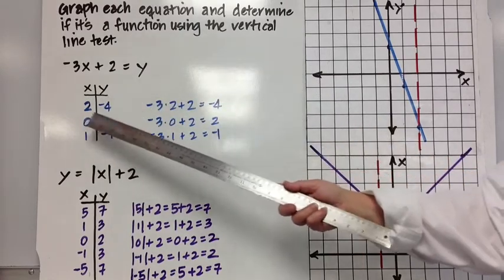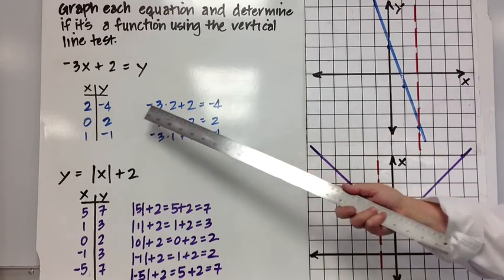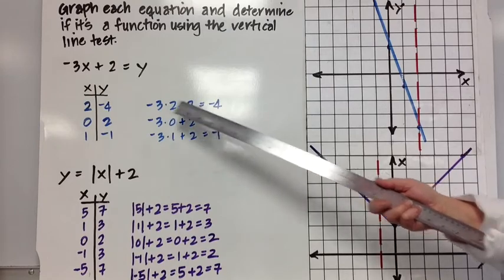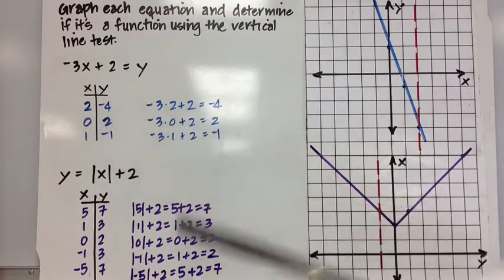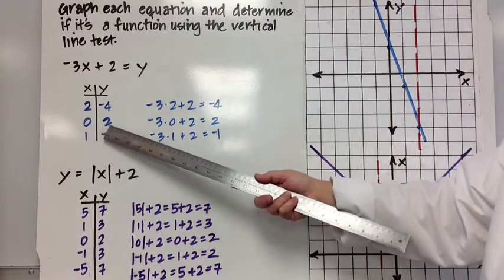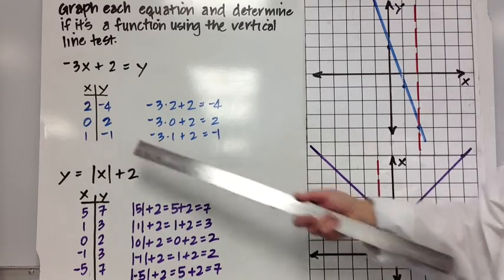Pick any values. I picked 2. When x is 2, y is negative 4. Negative 3 times 2 plus 2 is equal to negative 4. So when x is 2, y is negative 4. I do that with two other points, 0 and 1. When x is 0, y is 2. When x is 1, y is negative 1.